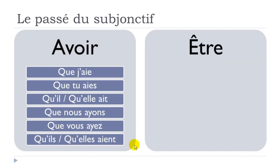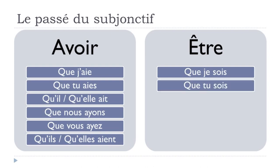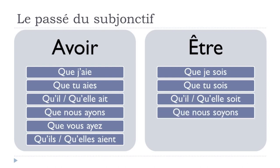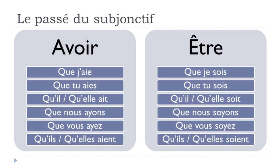Être at the subjonctif présent goes: que je sois, que tu sois, qu'il soit, qu'elle soit, que nous soyons, que vous soyez, qu'ils soient, qu'elles soient. One more time: que je sois, que tu sois, qu'il soit, qu'elle soit, que nous soyons, que vous soyez, qu'ils soient, qu'elles soient.